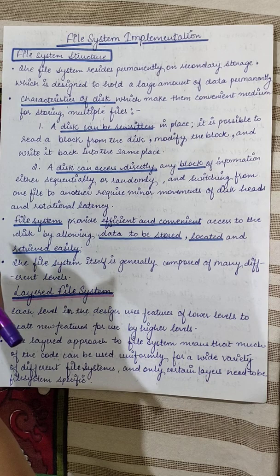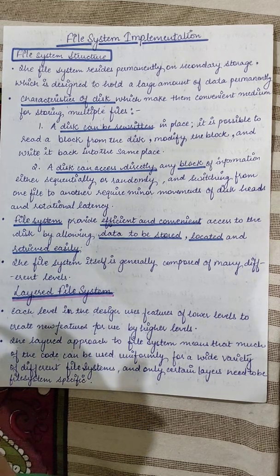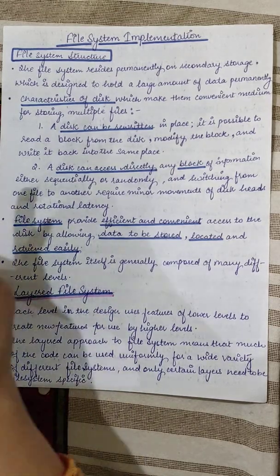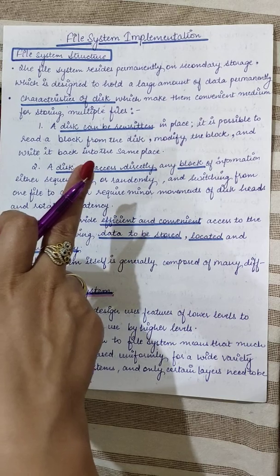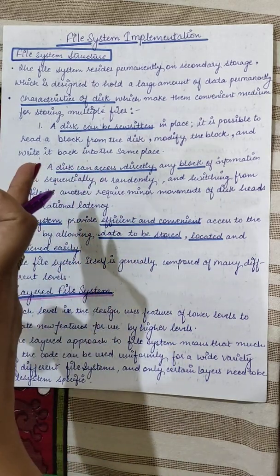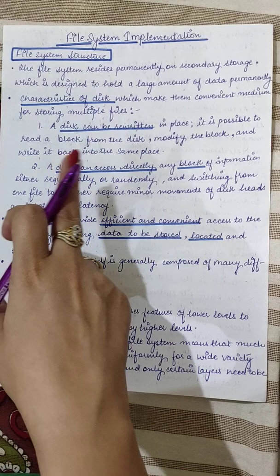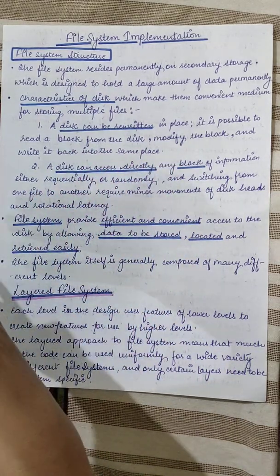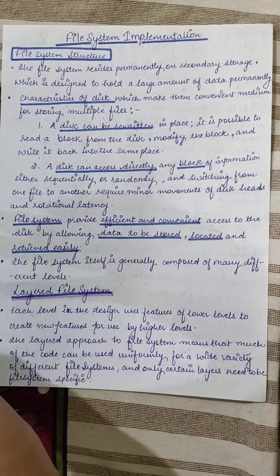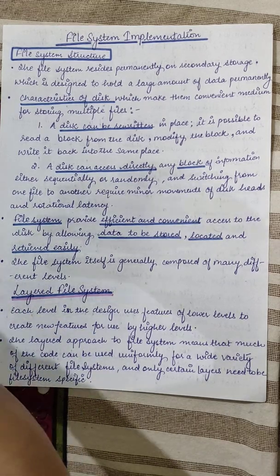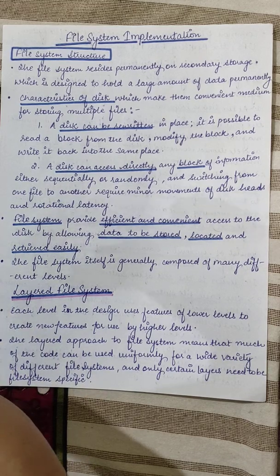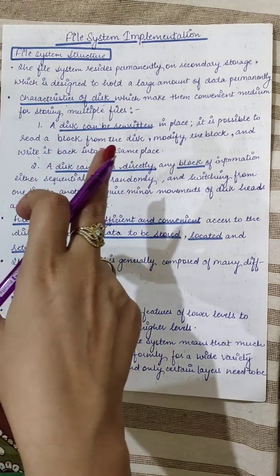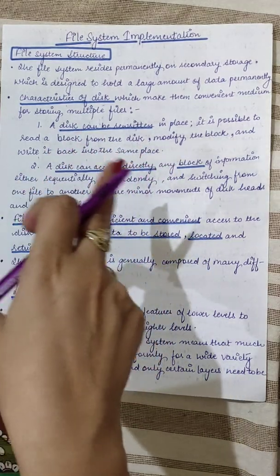Any file is a collection of related information, and that information is stored on permanent storage which is secondary storage, so that it can be held permanently — non-volatile storage. We choose hard disk for this reason: first, a disk can be rewritten in place, meaning you can read a block of data from the disk, modify the block, and write it back — which is not possible with magnetic tape.